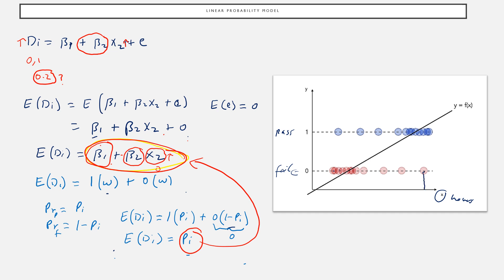Individuals who have practiced for many hours appear at higher values on the graph, while those who practiced very little hours appear at lower values. The blue points represent those who practiced fewer hours and failed, and those who practiced many hours and passed. As the number of driving hours increases, the probability of passing the test increases until it reaches its maximum point.